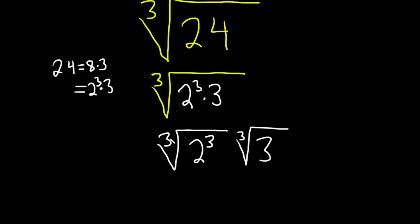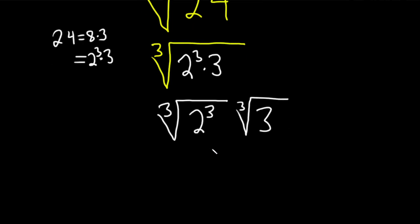And because these are the same, because the exponent matches the order, this is also called the index of the radical, they cancel basically. So you just now get 2 times the cube root of 3. And that's actually your answer.